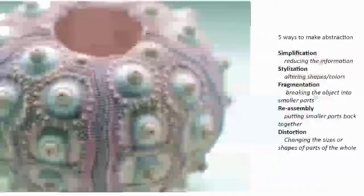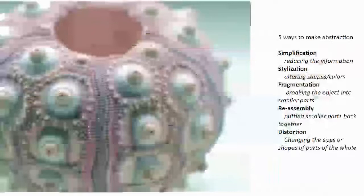We saw some of that as Mondrian was removing the form of the tree trunk. We also see some reassembly when he started to put the pieces that he had broken apart back together in a new way. Reassembly can be putting them together in a new way or in the same way that they were before. And finally is distortion, which is changing the sizes or shapes of parts of the whole thing — stretching or changing the sizes of things.